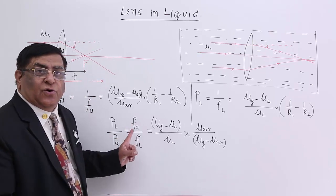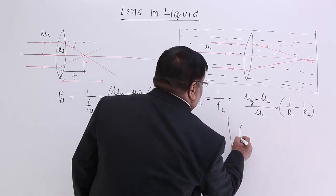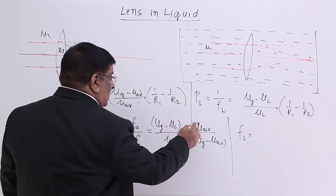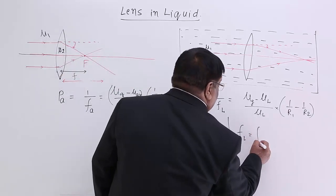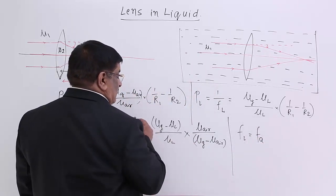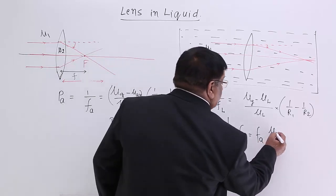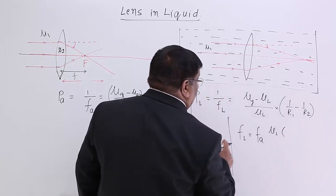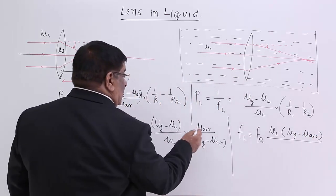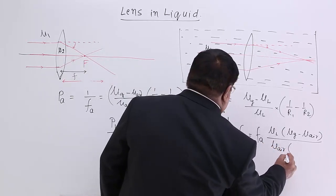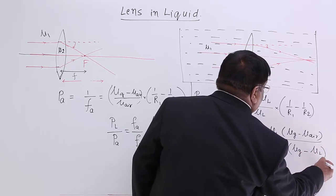Let us find the ratio of focal lengths and isolate focal length in the liquid. Focal length in liquid equals focal length in air, multiplied by mu_liquid, multiplied by (mu_glass − mu_air), divided by (mu_glass − mu_liquid). This is the general formula.